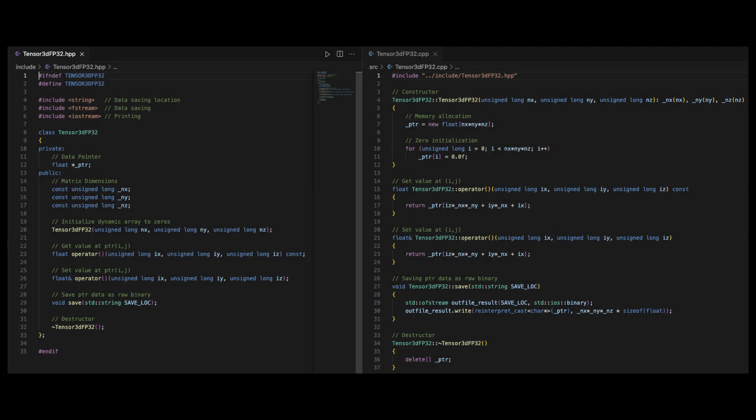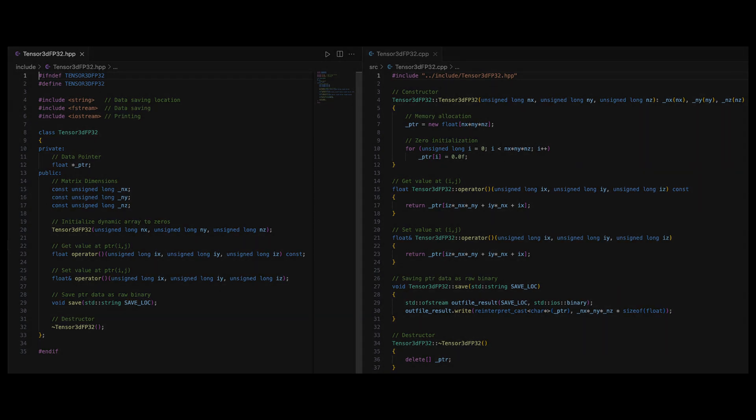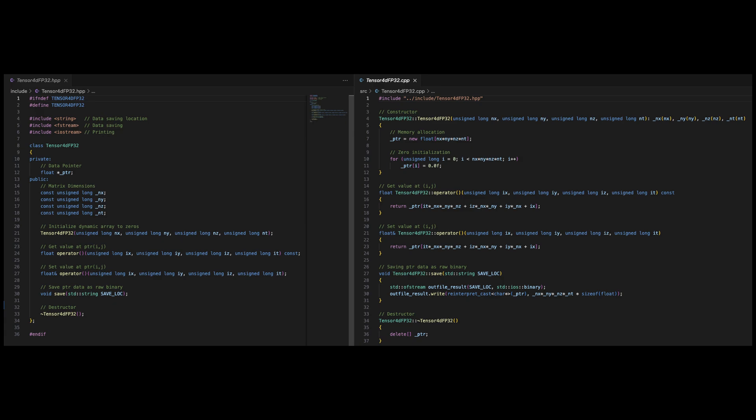Like matrix FP32, I also defined tensor 3D FP32 that made working with the 3D velocity model easier, and tensor 4D FP32 to store the 4D solution tensor.